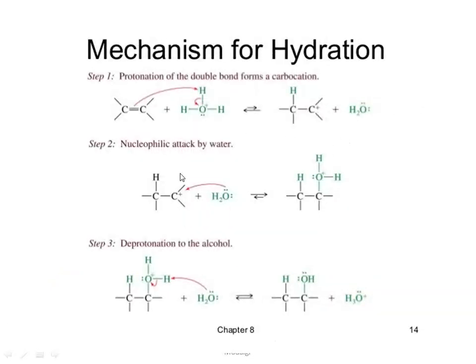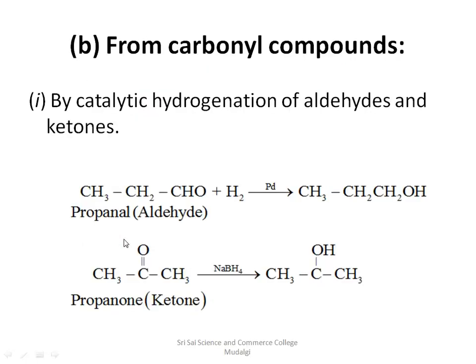This is the important mechanism — perfectly practice this for the three-mark question. Each step is very important, and the representation of carbocation is also very important. Make sure to represent each step clearly, including arrow marks, positive charges, and by-products, as missing these may cost you marks.